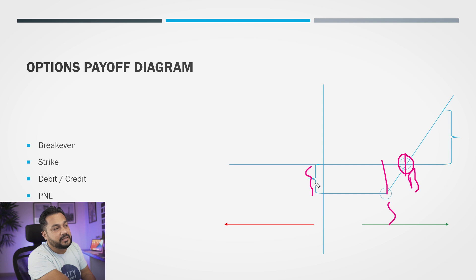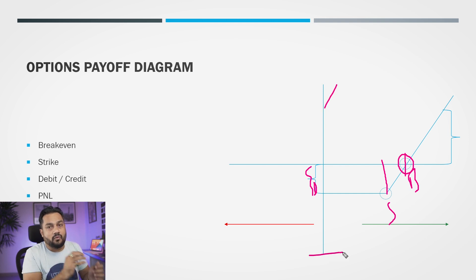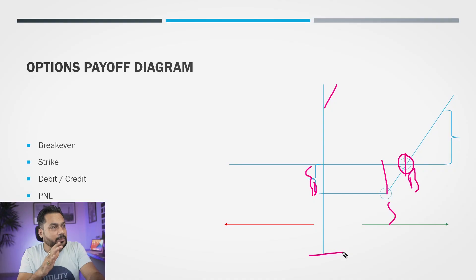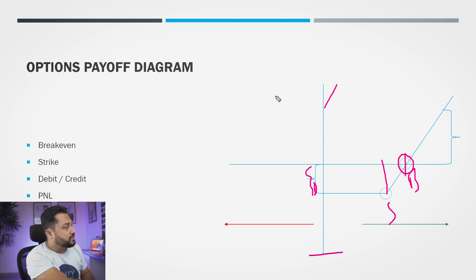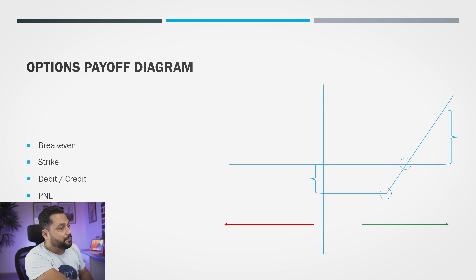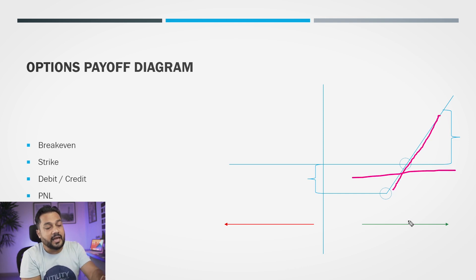Now you know how the payoff diagram is constructed. You should understand the positive and negative side, debit and credit, where the intersection is — which is your break-even — and where the strike price is. This particular payoff I am referring to is for the call. As you can see it is a debit, so I have bought a call. As the underlying rises, the line goes higher — the profit line goes up. This has variations depending on what you are buying.